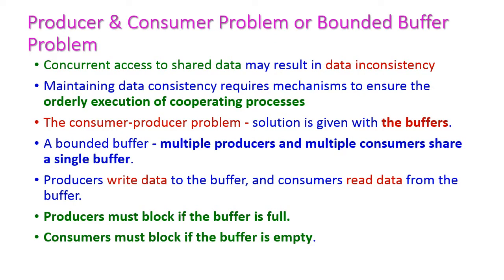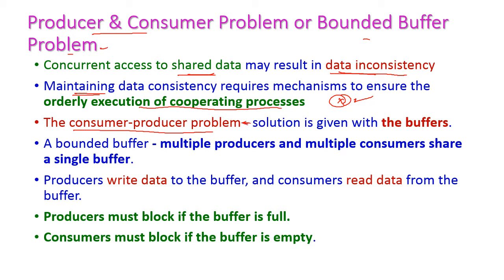Next let us see the producer-consumer problem, also called the bounded buffer problem. More number of processes can access the shared data at the same time, which may cause data inconsistency. To avoid this, we must maintain orderly execution of cooperating processes. Bounded buffer means multiple producers and multiple consumers share a single buffer — more number of producers and more number of consumers share this single buffer.